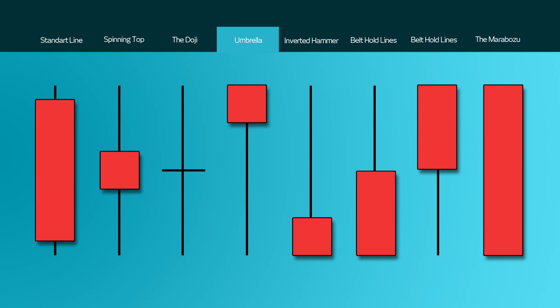The umbrella, hammer, or hanging man — depending on your take — can often be a bullish reversal pattern that forms after a decline. In addition to a potential trend reversal, these can mark bottoms or support levels. After a decline, hammers signal a bullish revival, and the low of the long lower shadow implies that the sellers drove prices lower during the session. The strong finish indicates that buyers would have regained their footing to end on a strong note. Confirmation is required following an actual hammer, umbrella, or hanging man. The inverted hammer appears at the bottom of a downtrend, while at the top of an uptrend it is known as a shooting star.